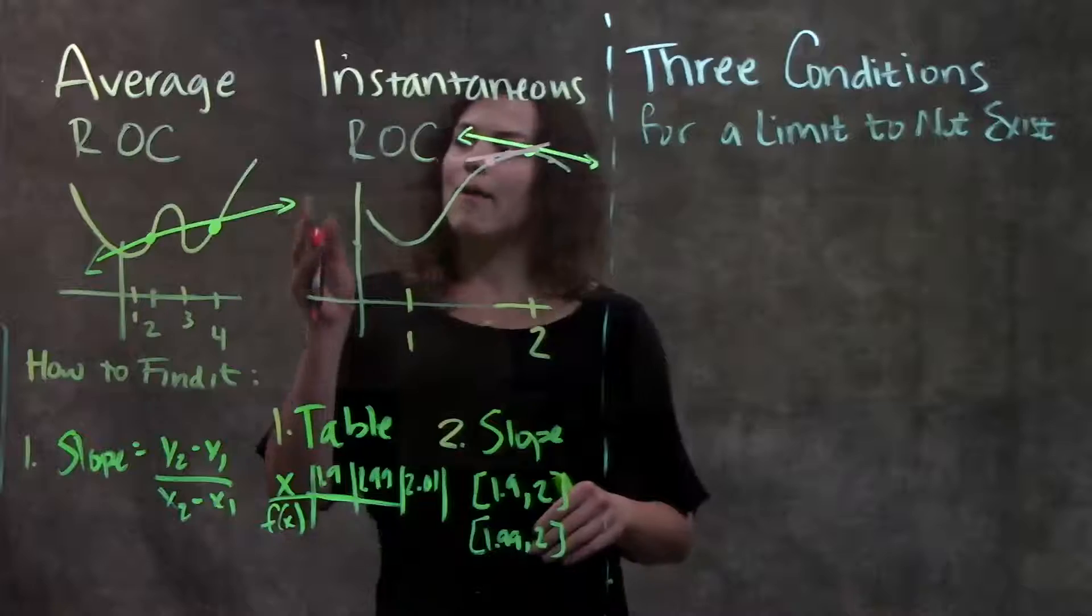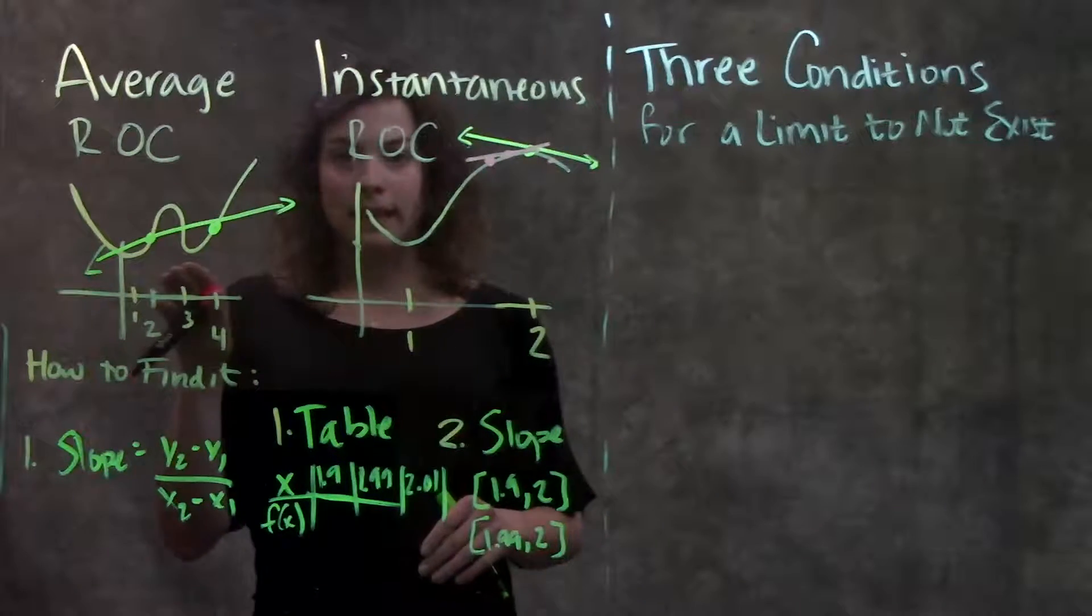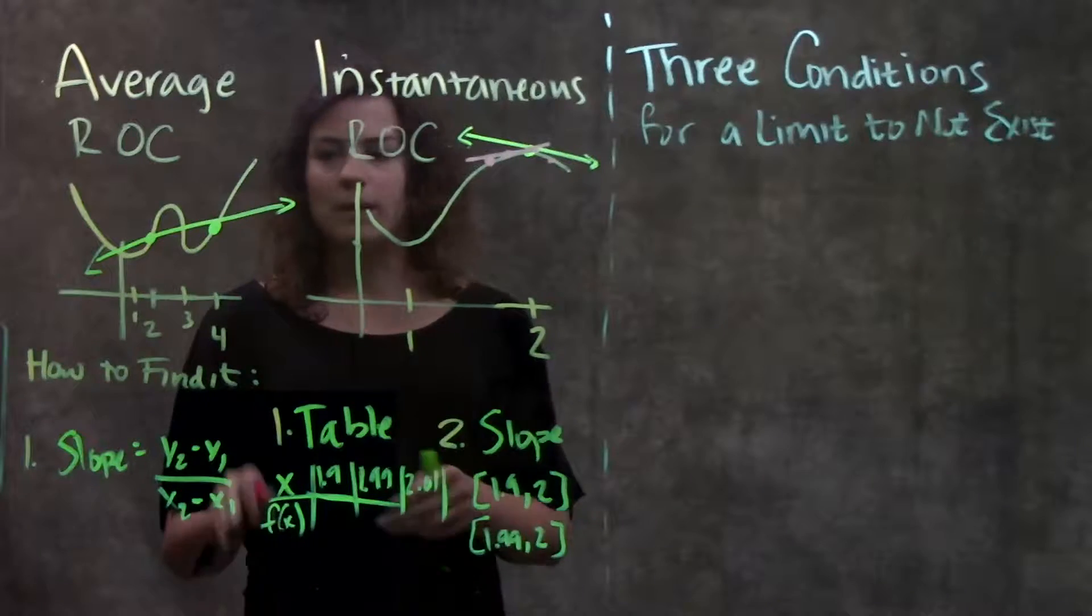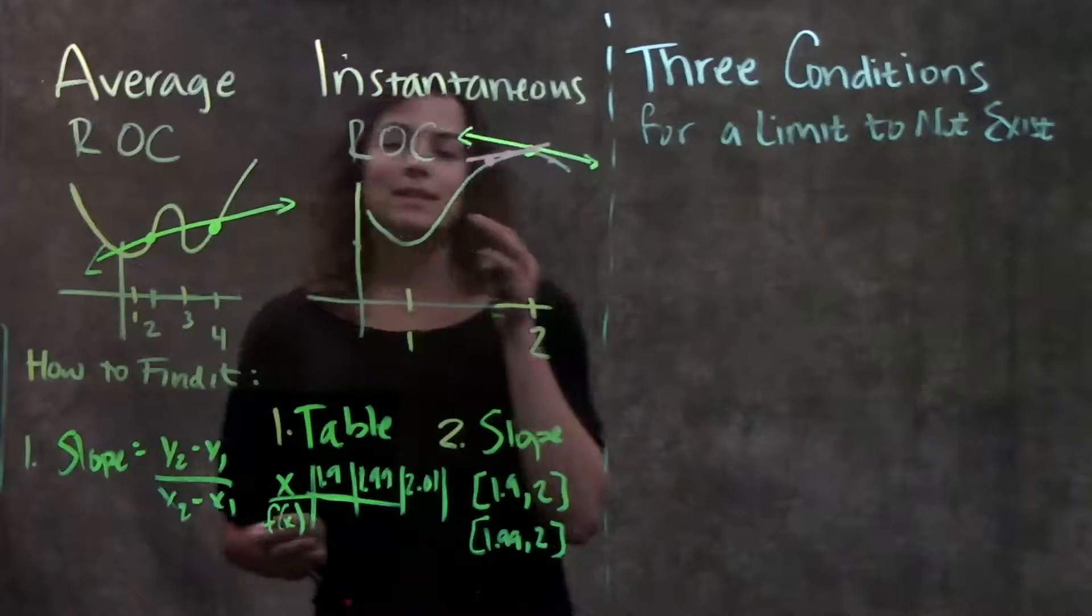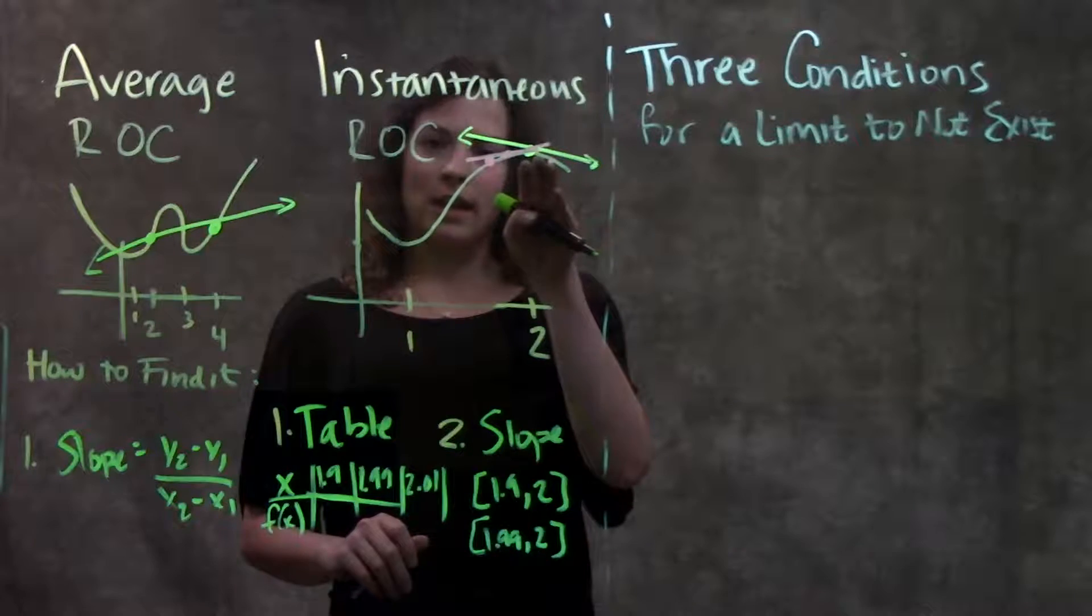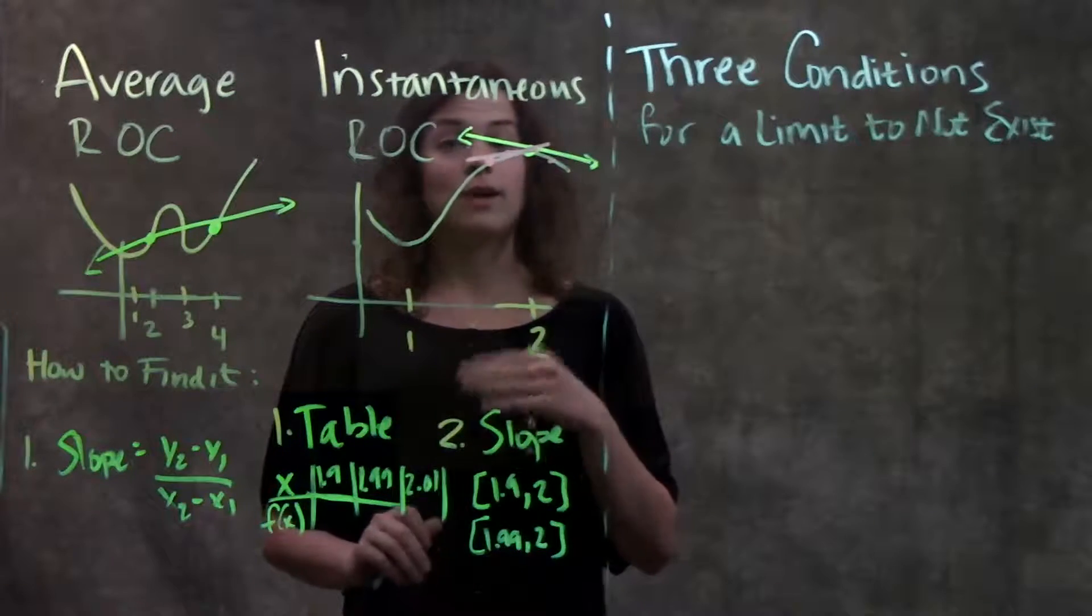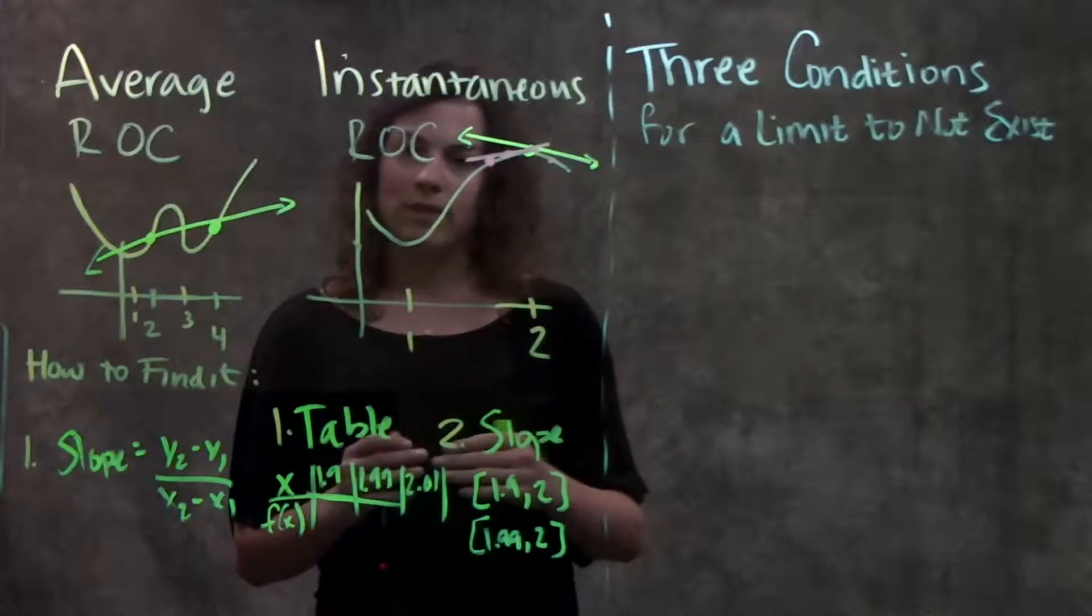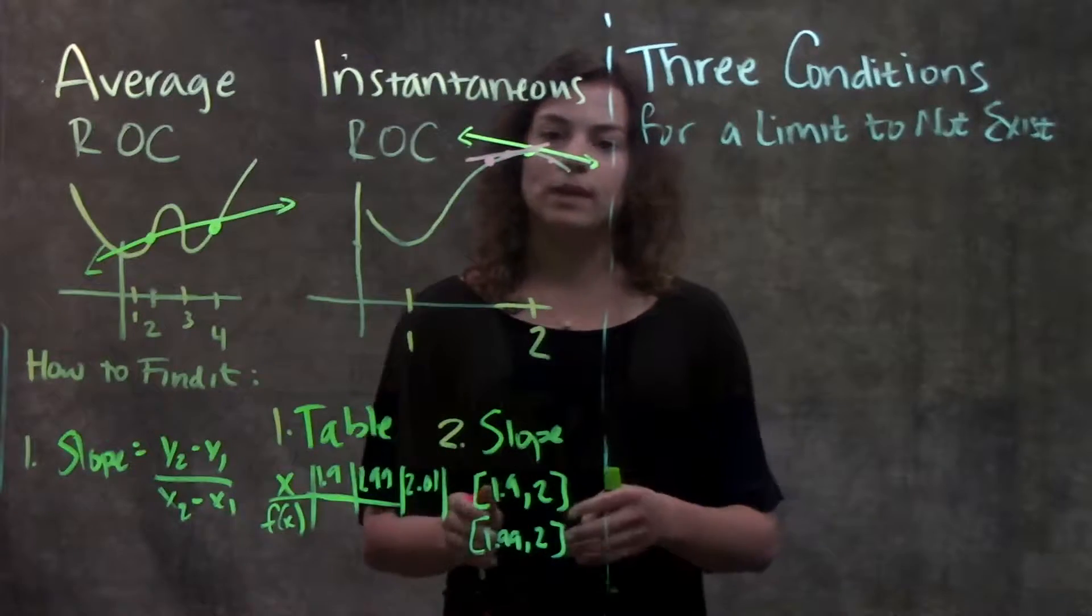Brief recap: average rate of change represented by a secant line on the graph. To calculate average rate of change, you just use a slope formula between those two points. And instantaneous rate of change is represented by a tangent line on the graph. You estimate that by making a table of x values approaching your point of interest and then finding the slope between all those values.